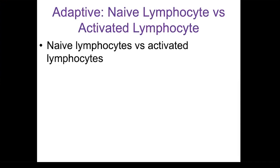The naive lymphocyte will leave the primary lymphoid organ and move into secondary lymphoid organs. If they encounter their specific antigen, they will become activated. That's the difference between a naive lymphocyte and an activated lymphocyte.